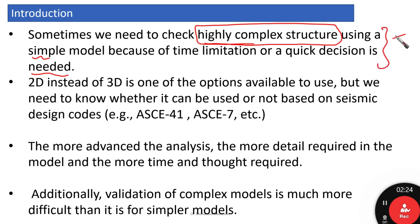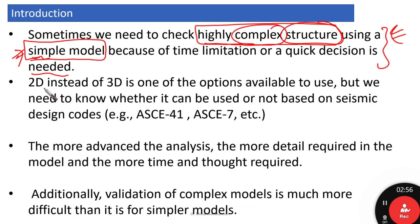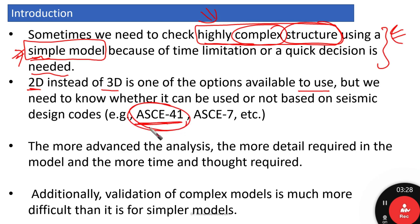Before going into the nitty-gritty of complex structures and modeling every element and component, you need to get some intuitive insight about the structure you have. A simple model is one of the tools to give you important information and a feel for the structure. 2D instead of 3D is one of the available options, but we need to know whether it is allowed based on seismic design codes like ASCE 41 and ASCE 7.